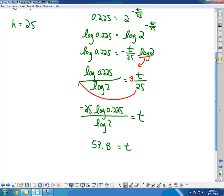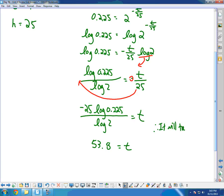What does that mean? Well, obviously we're dealing in years here. So therefore it will take 53.8 years to get to 22.5 milligrams, or to decay to 22.5 milligrams.